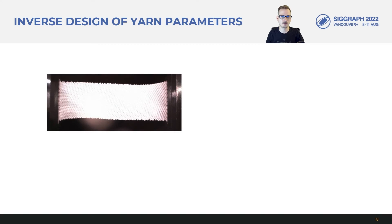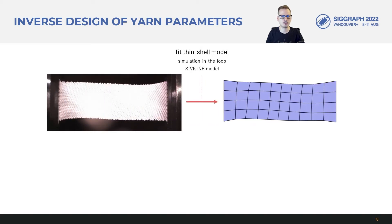We resolve these issues of non-uniformity and scale by using an intermediate thin-shell model. We first fit a thin-shell model to the three stretch directions. For this, we use a simulation-in-the-loop optimization that minimizes the error in boundary clamp forces and orthogonal compression at equilibrium.